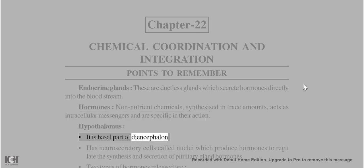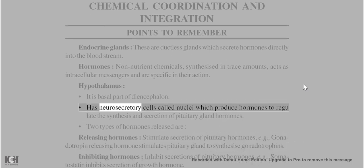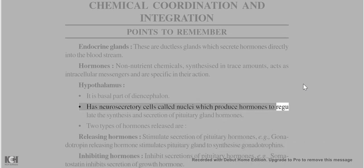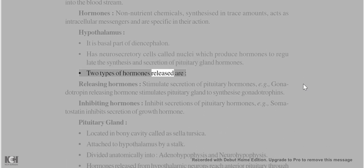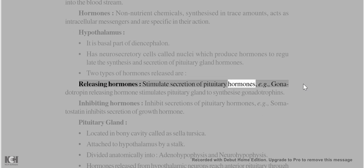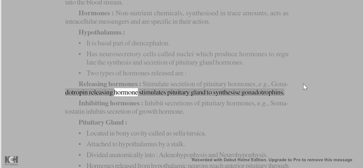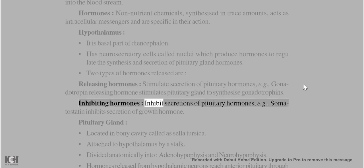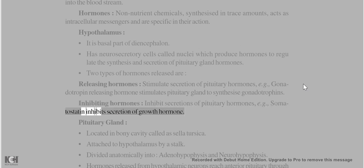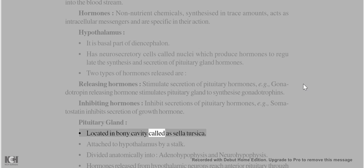Hypothalamus is the basal part of diencephalon. It has neurosecretory cells called nuclei which produce hormones to regulate the synthesis and secretion of pituitary gland hormones. Two types of hormones are released: releasing hormones, which stimulate secretion of pituitary hormones (e.g. gonadotropin releasing hormone), and inhibiting hormones, which inhibit secretions (e.g. somatostatin inhibits secretion of growth hormone).